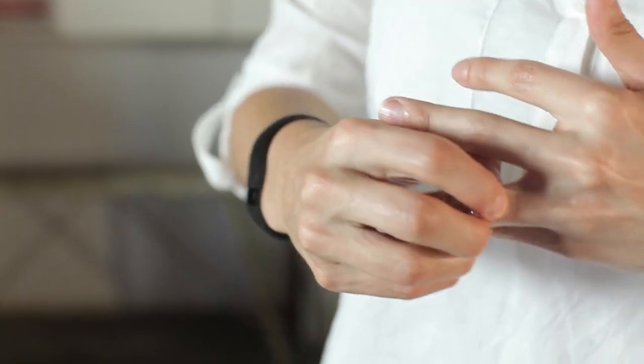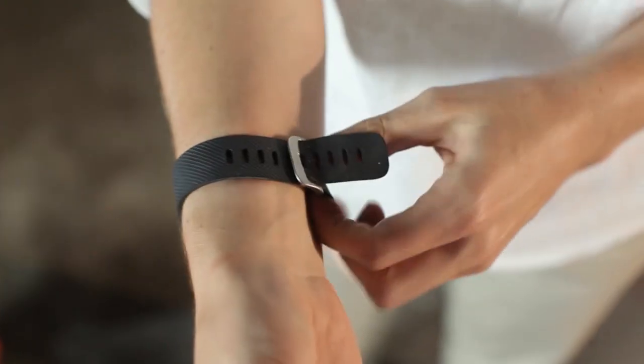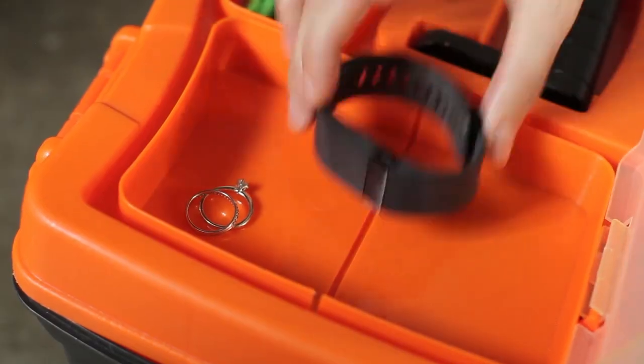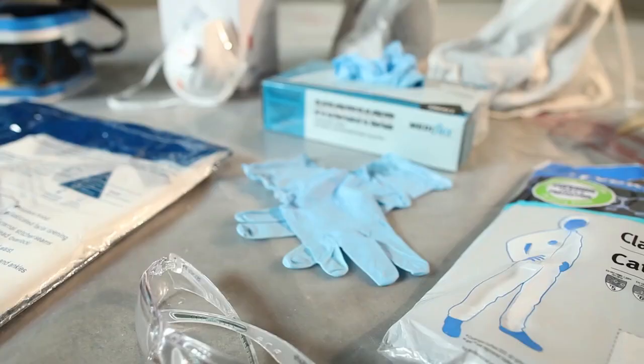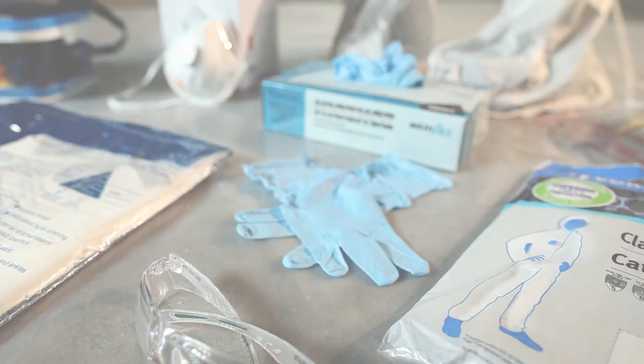Before putting on your PPE, remove all jewelry including watches and wedding rings. Your PPE items must fit properly and be in good working order. If you are using a respirator, it must be fit tested. The order of putting on your PPE is important.